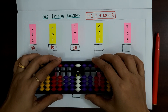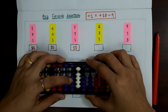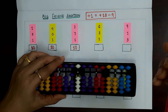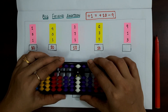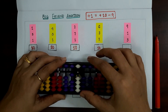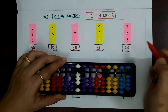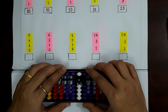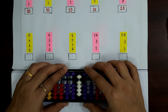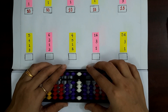Next example: 6 plus 3 plus 1. That is plus 10 minus 9. Answer is 10. Next example: 9 plus 1 plus 3. 9 plus 1 is plus 10 minus 9, plus 3. Answer is 13. Next example: 5 plus 4 plus 1 plus 3. 5 plus 4 plus 1 is plus 10 minus 9, plus 3. Answer is 13.